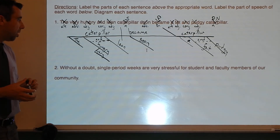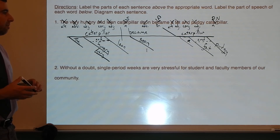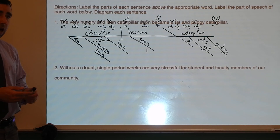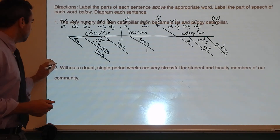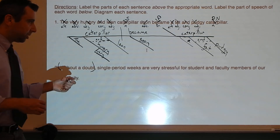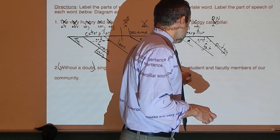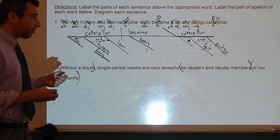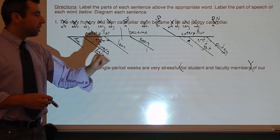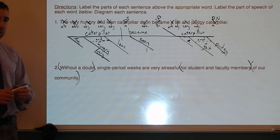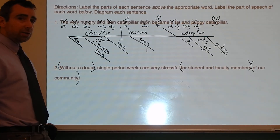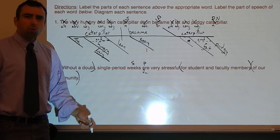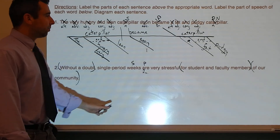Let's move on to number two: 'Without a doubt, single-period weeks are very stressful for student and faculty members of our community.' Parenthesize prepositional phrases first: 'without a doubt,' 'for student and faculty members,' and 'of our community.' Notice how that makes it easier to see the subject and predicate. Weeks is the subject, are is the predicate — it's a linking verb. Weeks are what? Stressful.